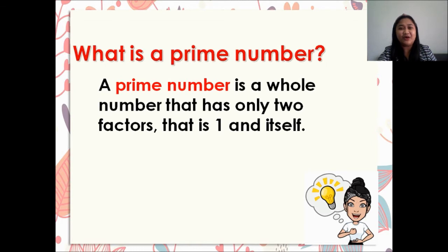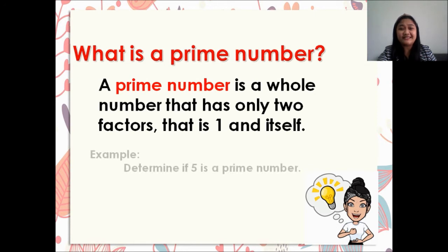A prime number is the whole number that has only two factors — that is 1 and itself. Again, a prime number is the whole number that has only two factors, that is 1 and itself. For example, let's determine if 5 is a prime number.